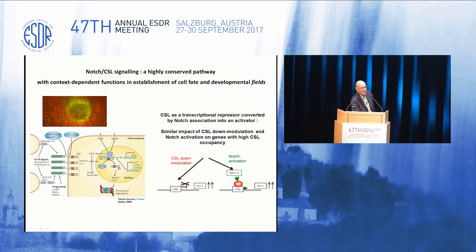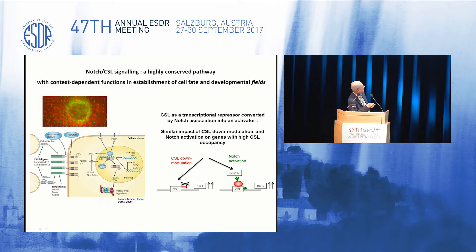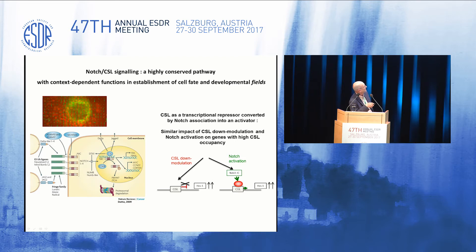Notch signaling is our favorite pathway — we look at Notch everywhere. It's a very important form of direct cell-cell communication, where ligands expressed by one cell activate the receptor on another. When activated, the receptor translocates to the nucleus and converts a DNA-binding protein called CSL, also known as RBPJK or CBF1, from a repressor of transcription into an activator. Classical studies in Drosophila have shown that compromised Notch signaling results in alteration of developmental fields — and I'd like to make an analogy between developmental fields and cancer fields.